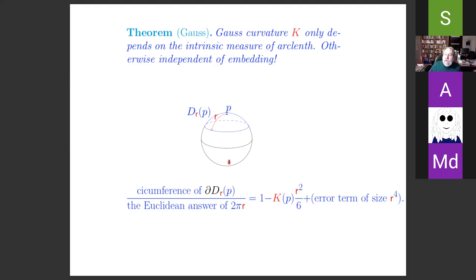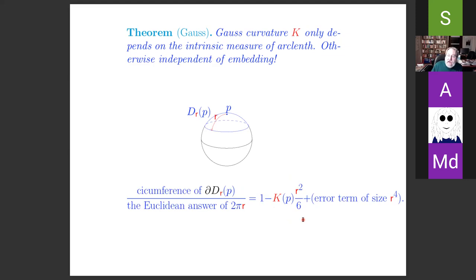On the unit sphere, where the Gauss curvature is 1, this power series is exactly the power series for sin(R)/R, which is 1 − R²/6 + higher-order terms. The expression has a well-defined second derivative at R = 0, and that second derivative is a constant times the Gauss curvature. This is an illustration of the Theorema Egregium — 'remarkable theorem' — discovered by Gauss, who considered it the most important result in his book.